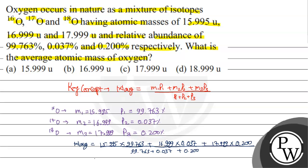When you solve this, M average will be equal to 15.999. So according to your question, option A will be your correct answer.